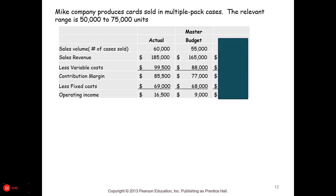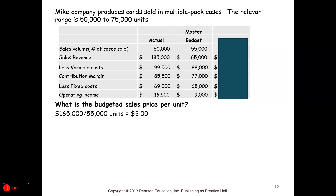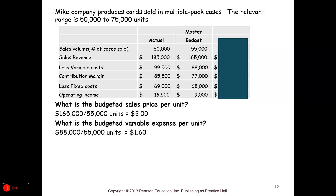Here's our original budget. The relevant range is 50,000 to 75,000 units. Sales volume was budgeted at 55,000 cases and we actually sold 60,000. The budgeted sales price per unit is $165,000 divided by 55,000, which equals $3. The budgeted variable expense per unit is $88,000 divided by 55,000, which equals $1.60. Now, what is the total variance and is it favorable or unfavorable?